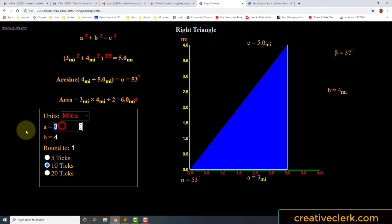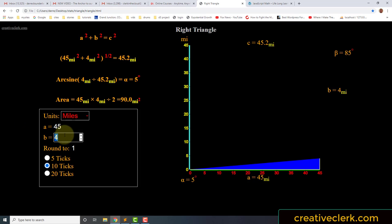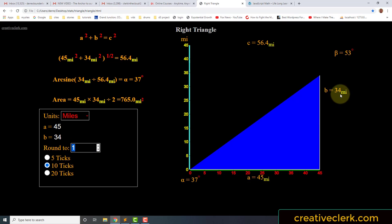But when we change any of these values, say we go to 45, and we get this new calculation. And if we go to 34 for our b side, see now that we got 34,